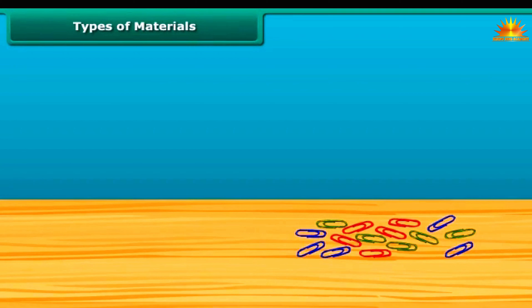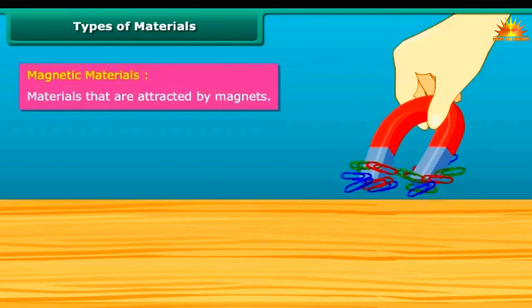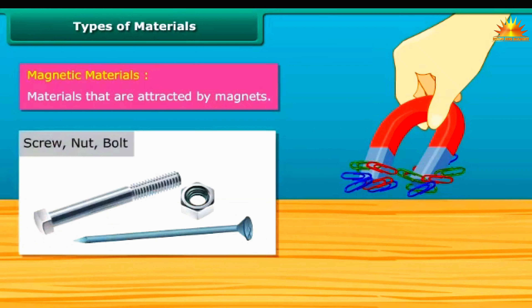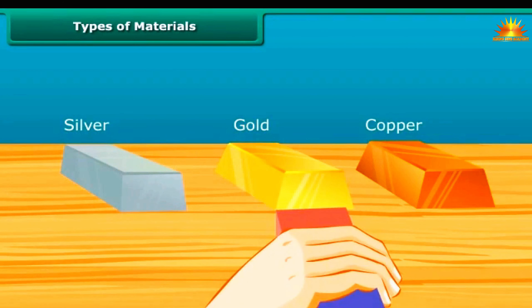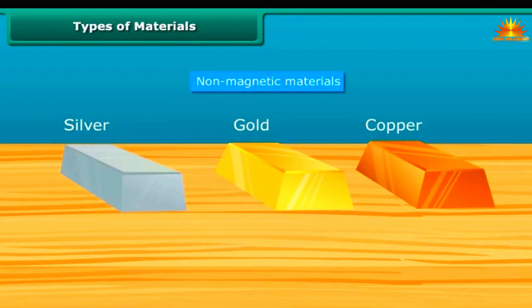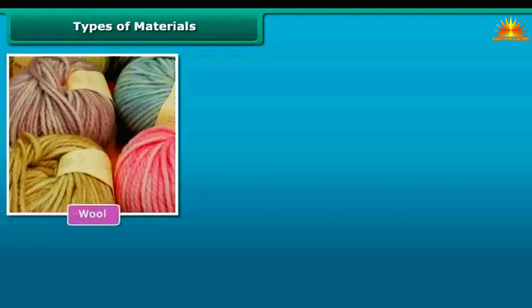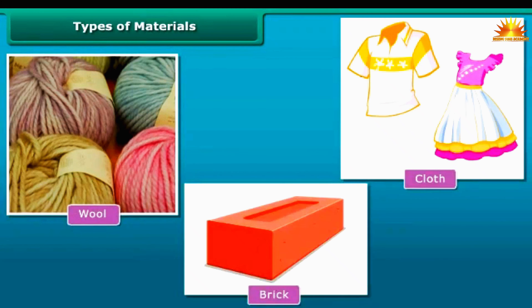Types of Materials. Now let us look at the types of materials. Materials that are attracted by magnets are called magnetic materials — for example, screws, nuts, and bolts are magnetic materials. Materials that are not attracted by magnets are called non-magnetic materials — for example, wool, cloth, and bricks are non-magnetic materials.